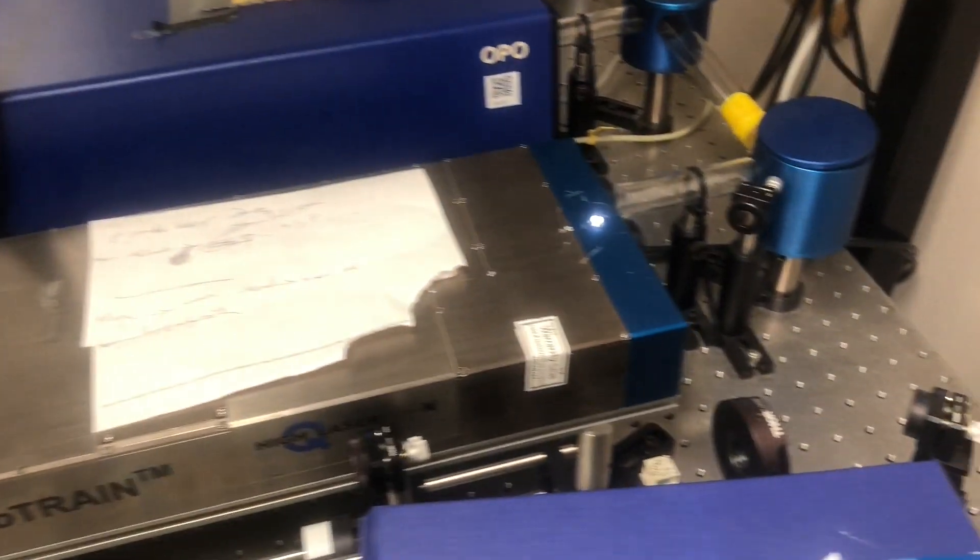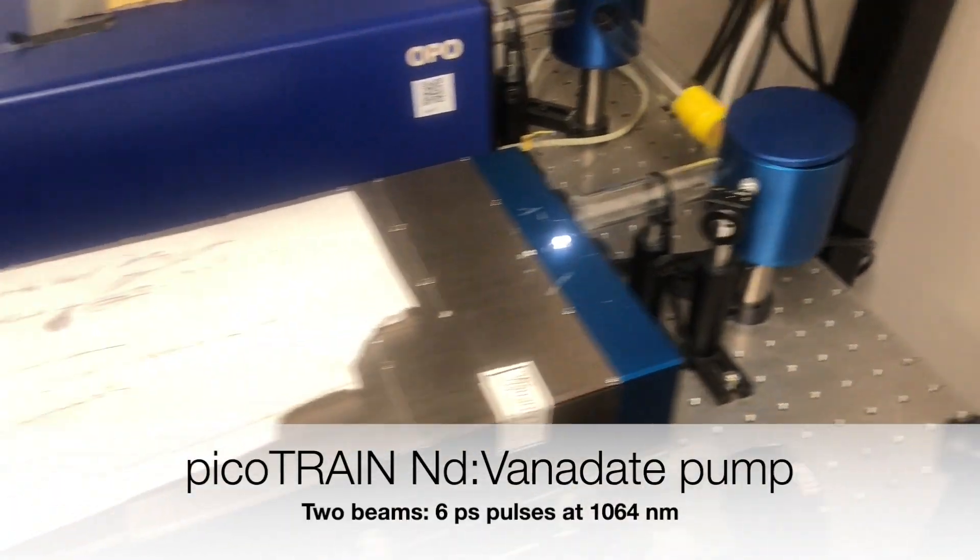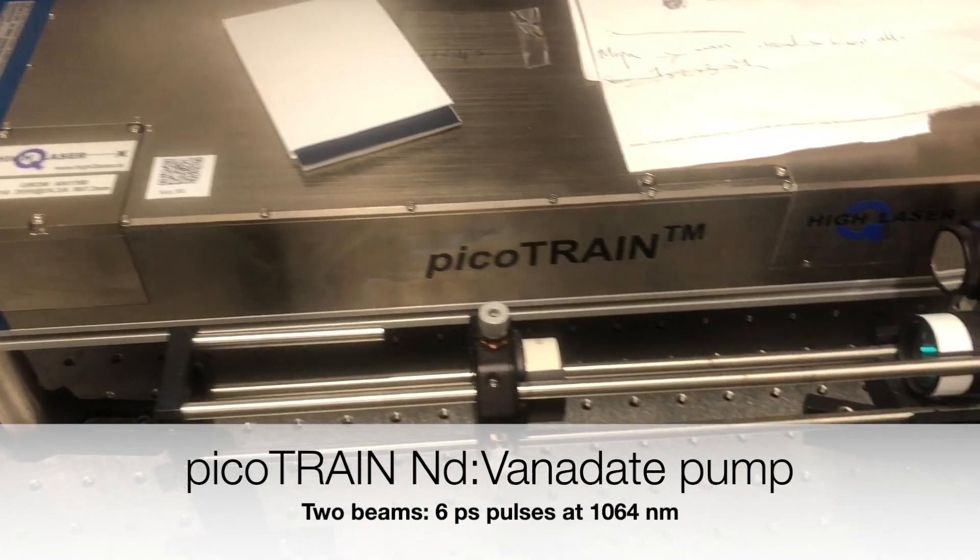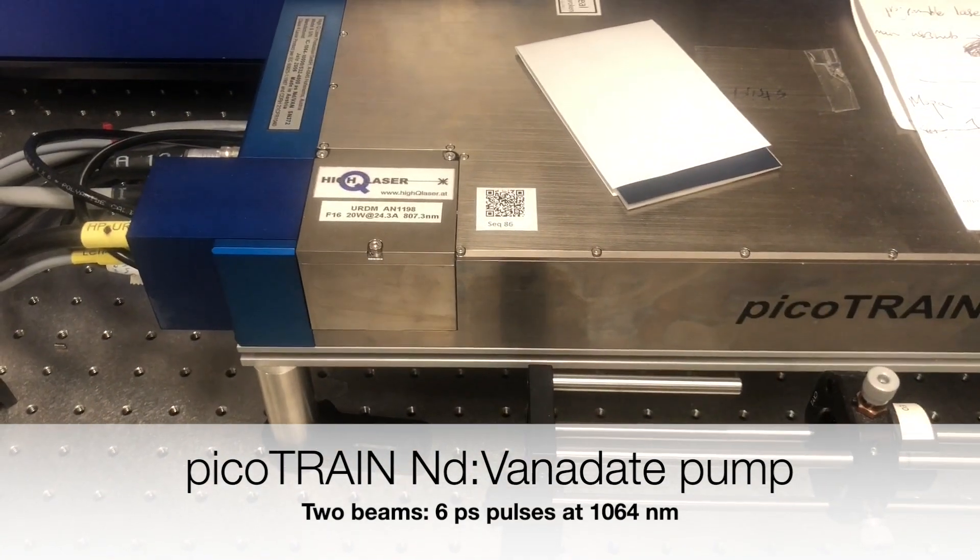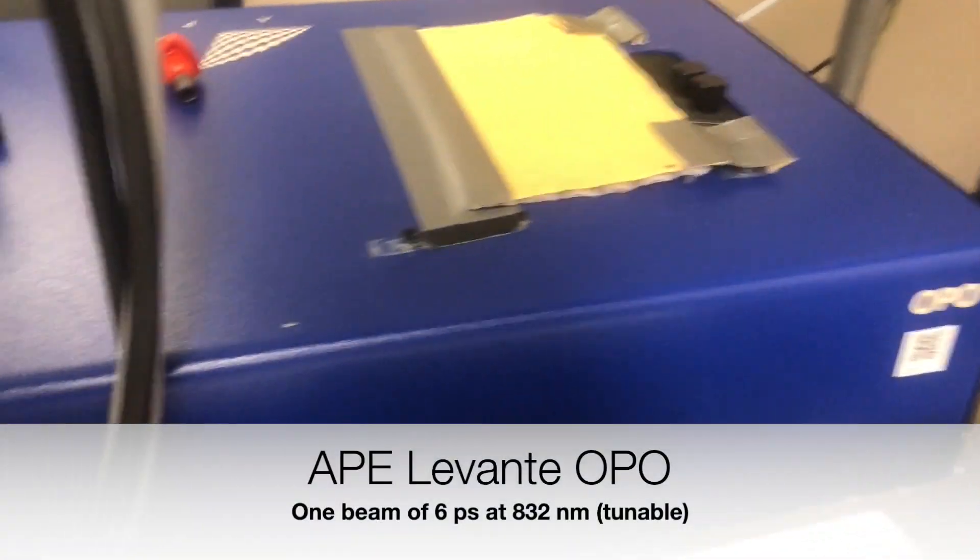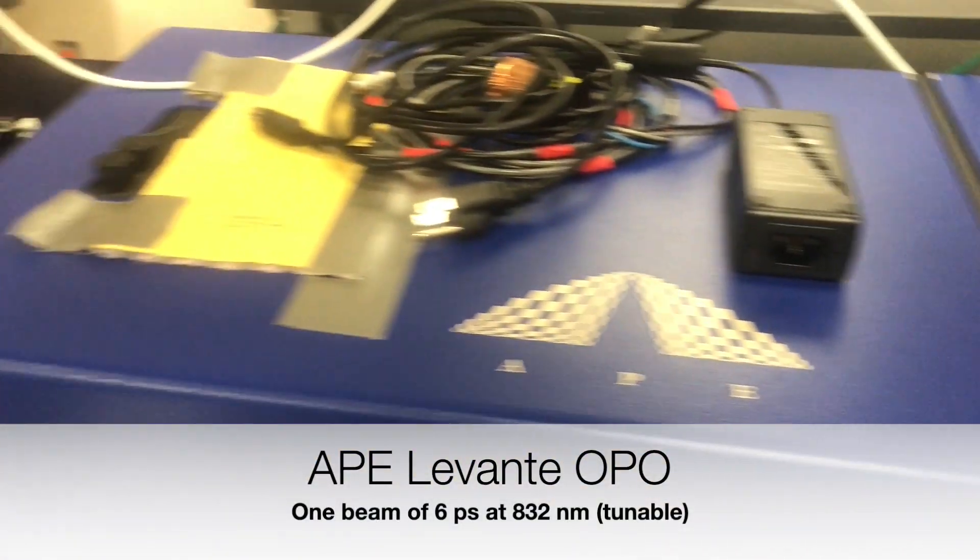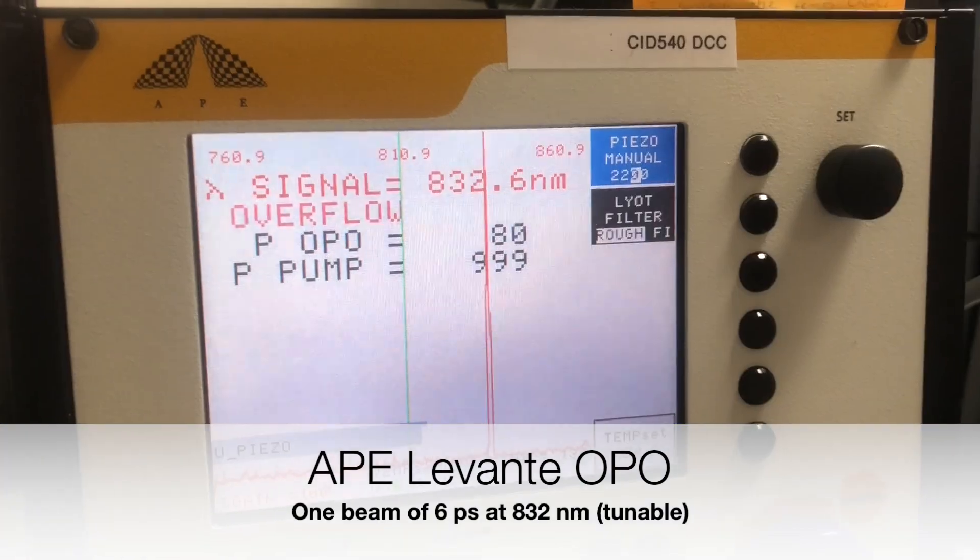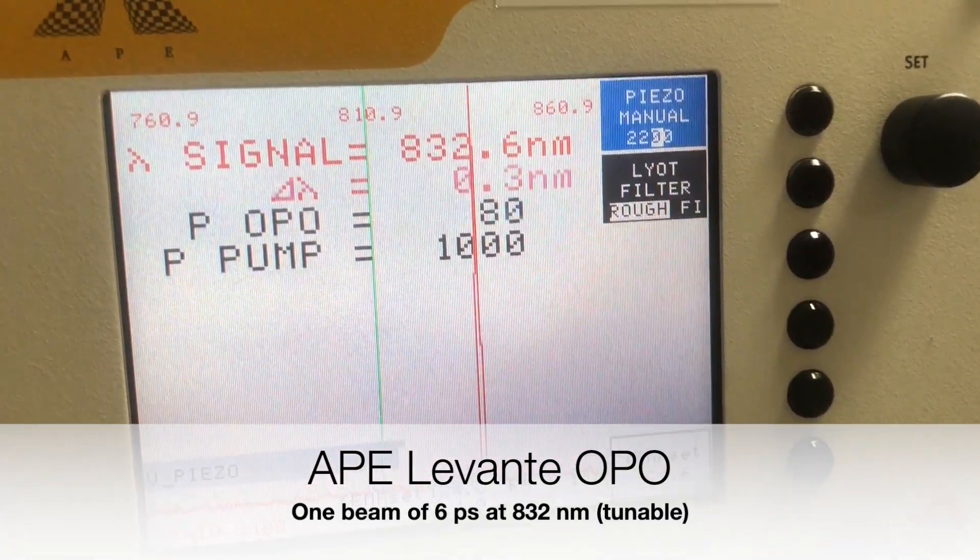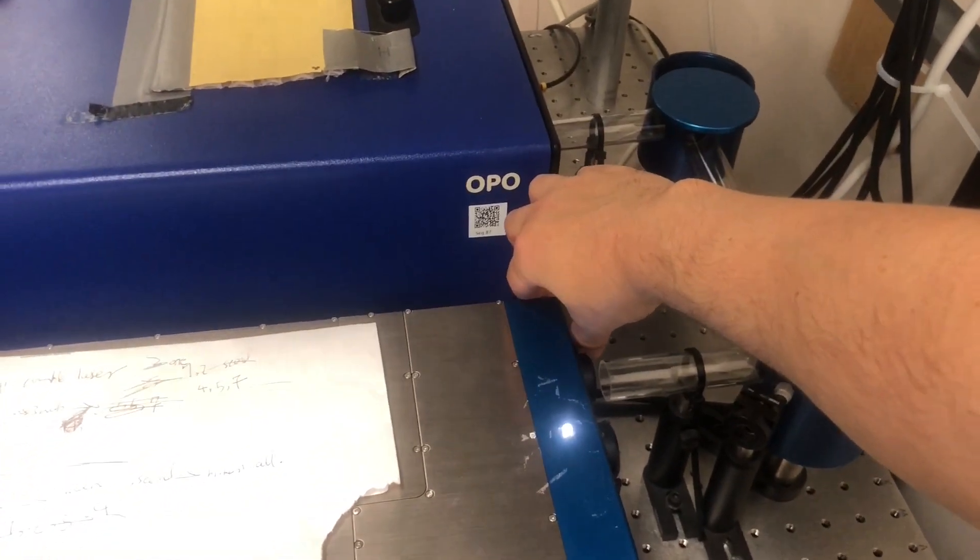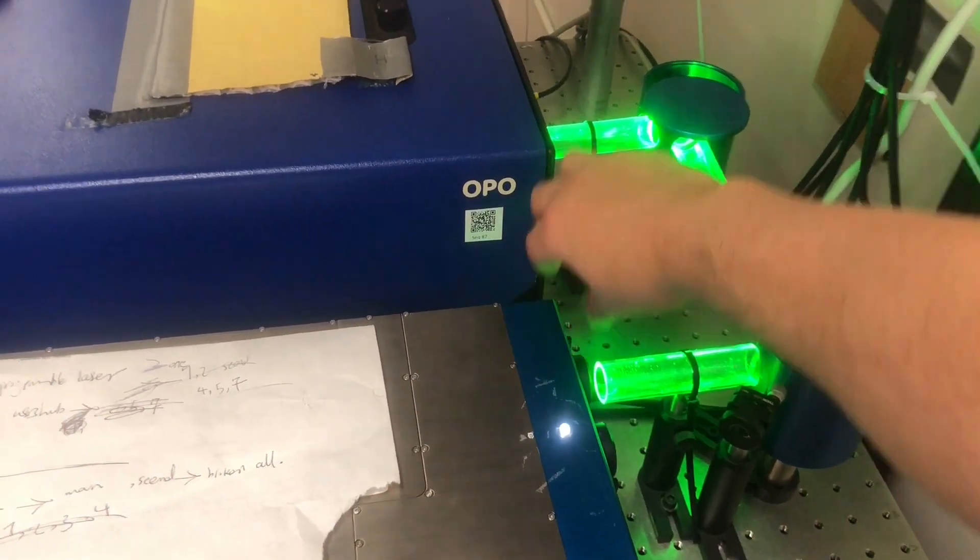First things first, let's turn on the laser. We're going to be using a Picotrain that generates 1064 nanometer light with an optical parametric oscillator from APE in Germany called the Levante. The OPO generates a beam at 832 nanometers. The Picotrain has an output at 532 to pump the OPO, but we're going to be using the main beam at 1064 nanometers.